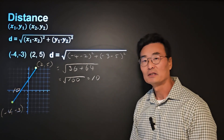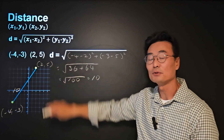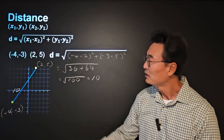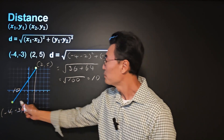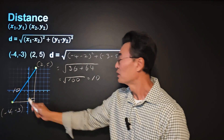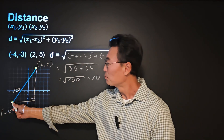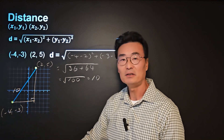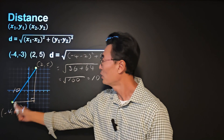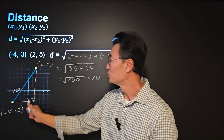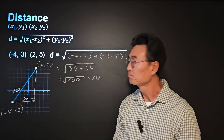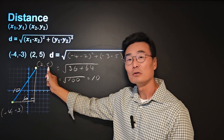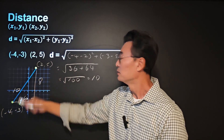The formula for the distance between two points actually comes from the Pythagorean theorem. If we make a right triangle, the distance from point negative 4 comma negative 3 to the corner is from negative 4 to 2, which is 6. The height of that right triangle is from negative 3 all the way up to 5, a distance of 8.